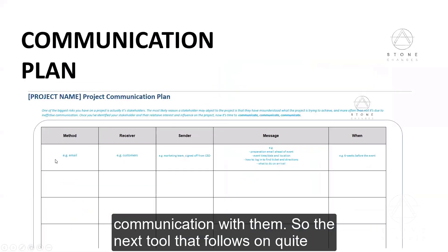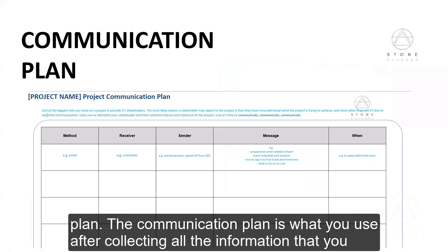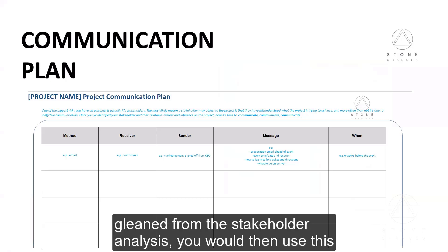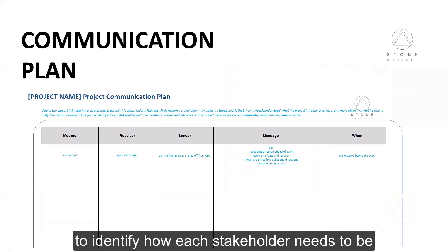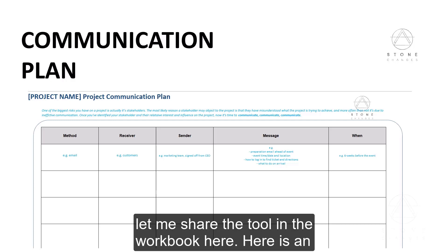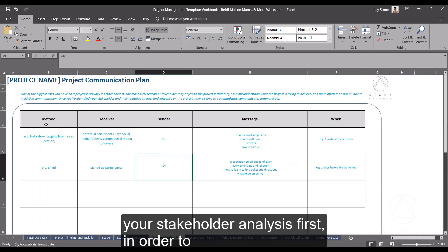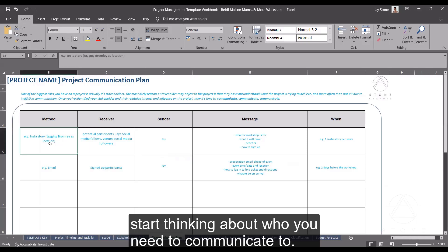The next tool that follows on quite nicely from the stakeholder analysis is the communication plan. All the information you gleaned from the stakeholder analysis you would then use to identify how each stakeholder group needs to be communicated with and what needs to be communicated to them. You want to have done your stakeholder analysis first in order to start thinking about who you need to communicate to.